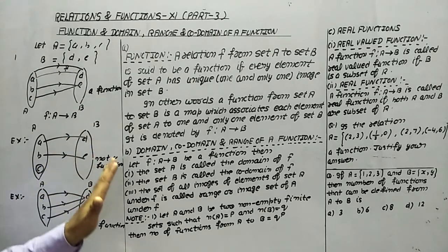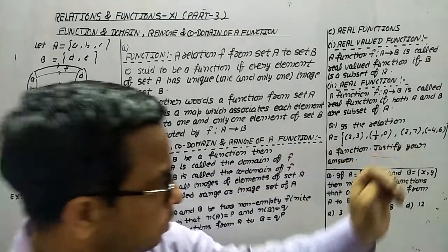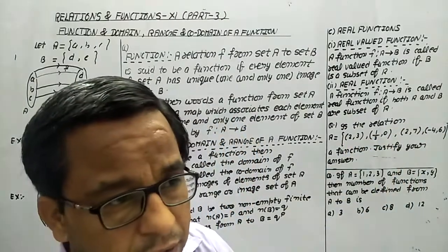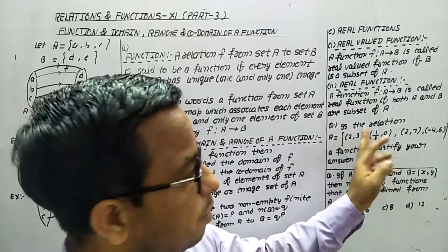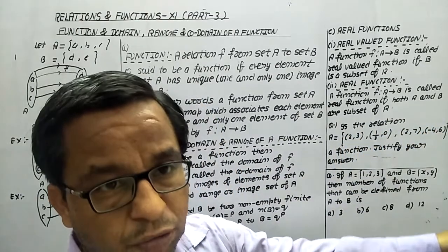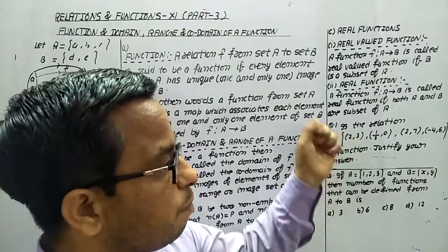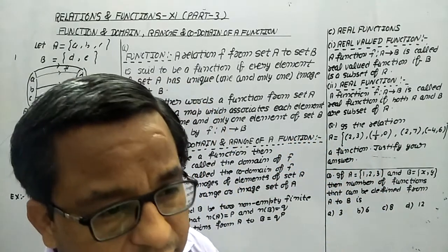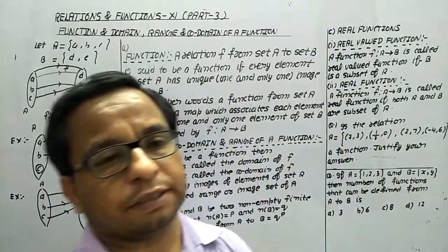For the non-function case we can't say anything about range because it is not a function. Now, one more important example: is the relation defined as a function? Justify your answer. Simply, we can see element 2 has the image 3, and element 2 also has the image 7. That is why it is not a function — because element 2 does not have a unique image in set B.